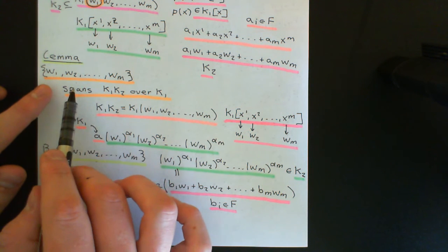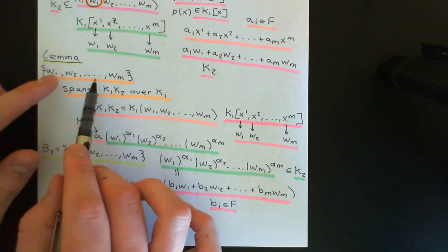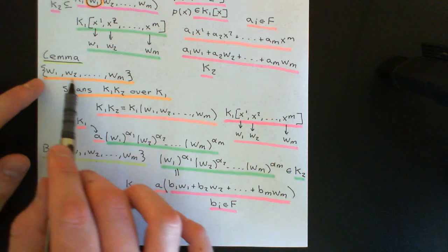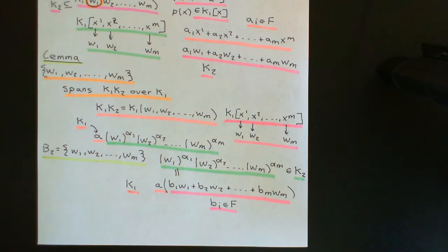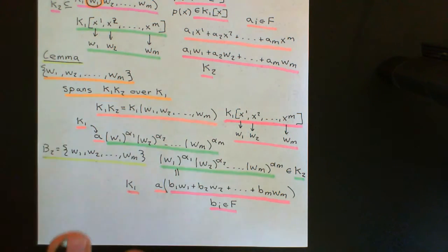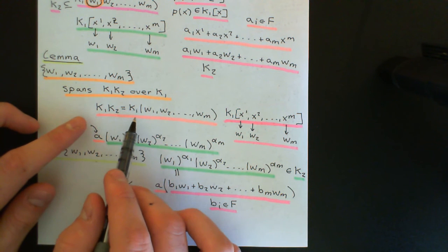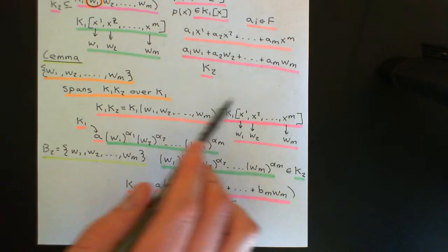This is exactly what we mean by saying that the composite of k1 and k2 is spanned over k1 by the vectors w1, w2, all the way up to wm — because the composite equals this field extension of k1. Everything truly in the composite of k1 and k2 equals a k1-linear combination of w1, w2, all the way up to wm.